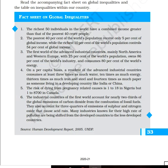If you see the fact file, there is global inequality seen in various spheres of life. The richest 50 individuals in the world have combined income greater than that of 40 crore people who are the poorest. The poorest 40 percent of the world's population receives only 5 percent of the global income, while the richest 10 percent controls 54 percent of global income.